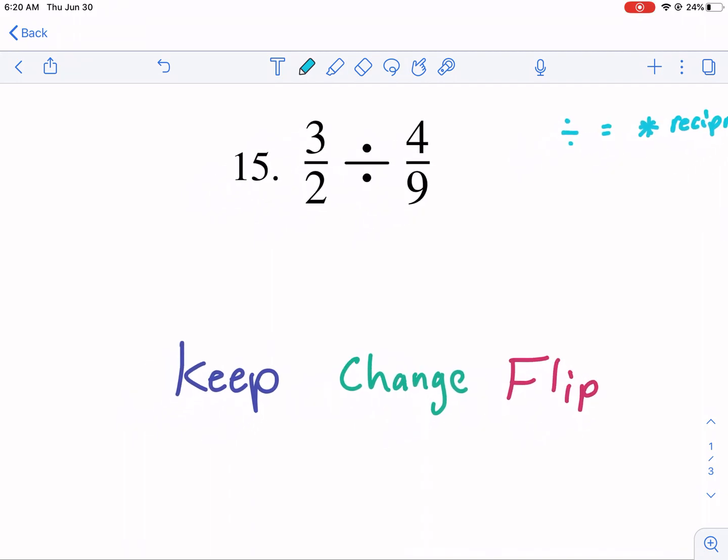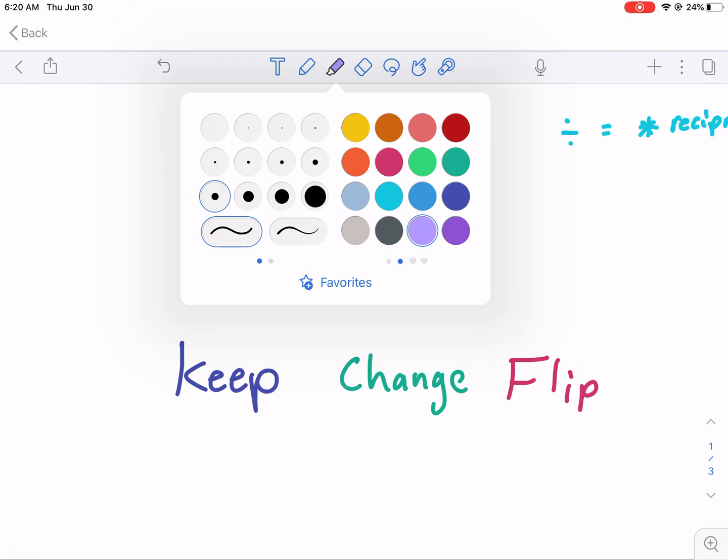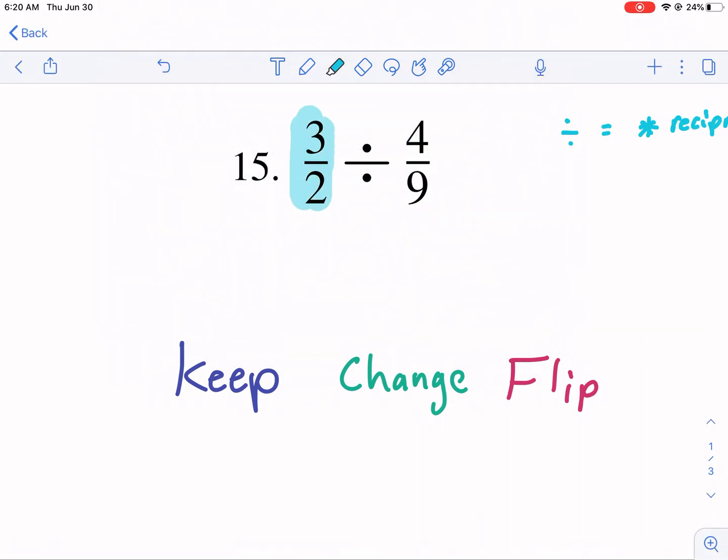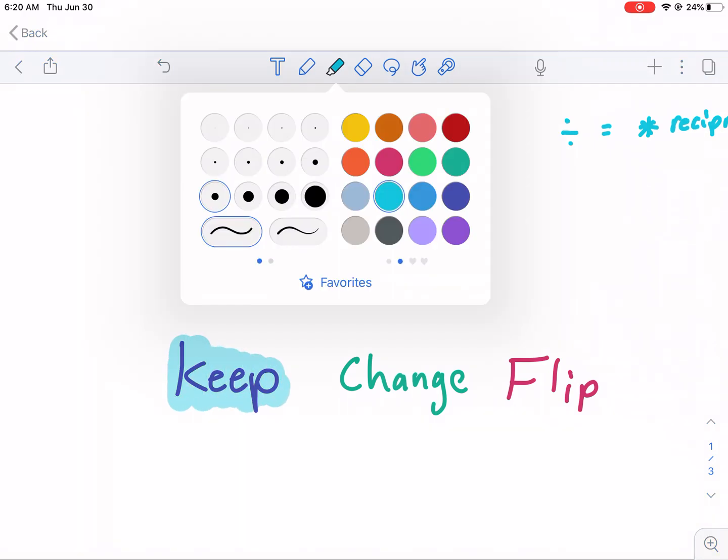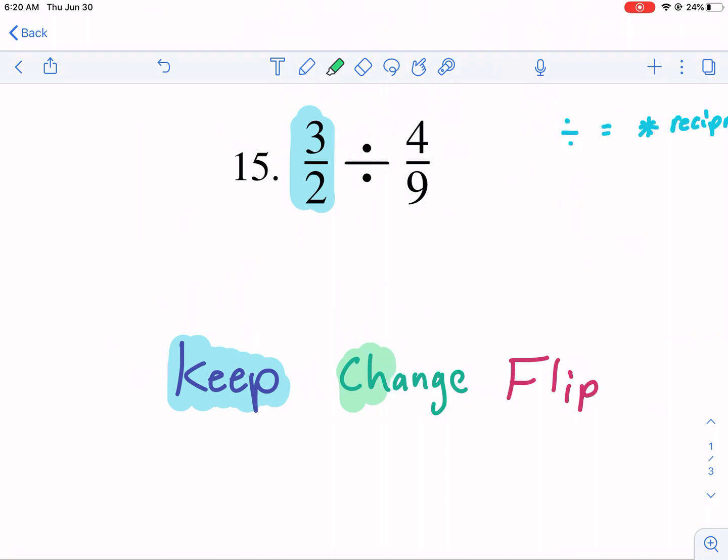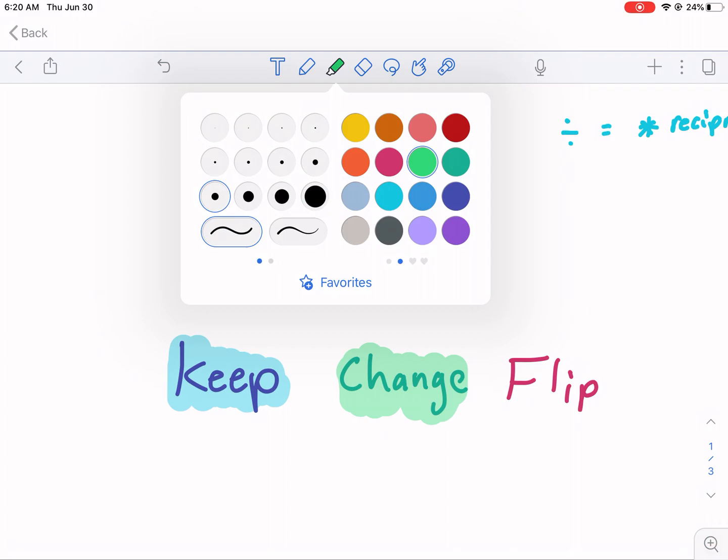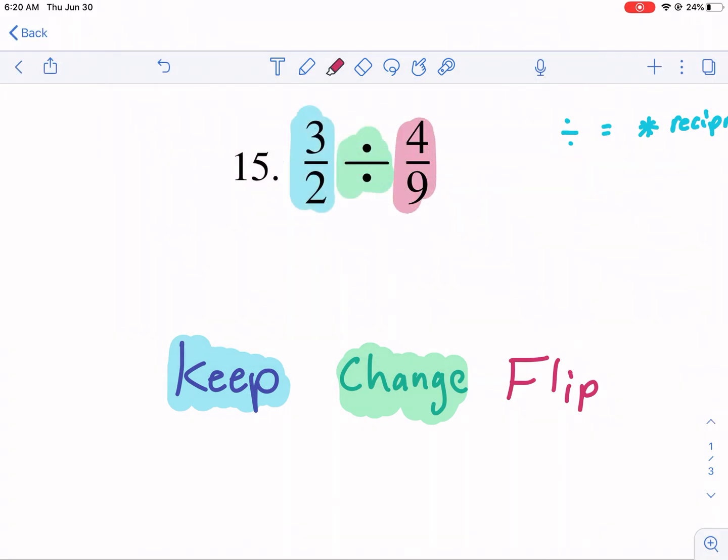Now, what do we do? Well, we're going to keep this first fraction. I'm going to use slightly different colors. We're going to keep this first fraction. We're going to change it to division, or sorry, we're going to change the division to multiplication. And then the last thing we're going to do is we're going to flip this guy. So keep, change, and flip.